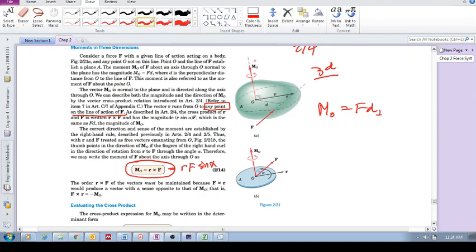The direction of a moment – first of all, moment is a vector so it has a direction. And this direction we determine using the right hand rule.